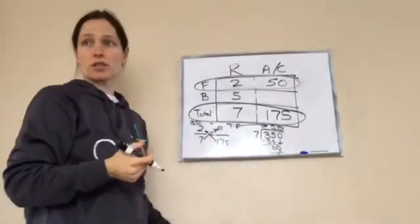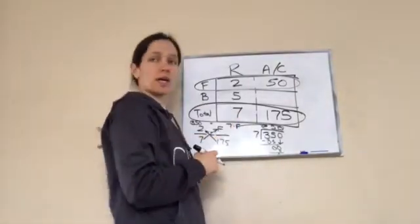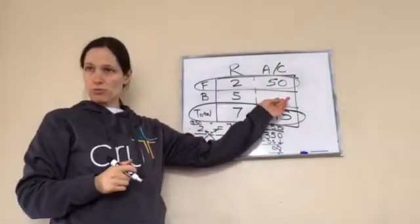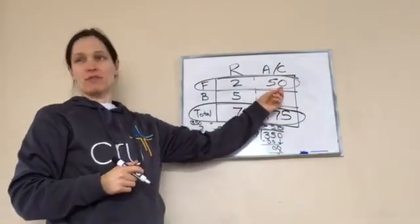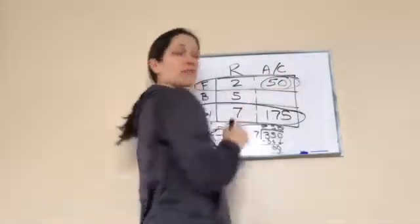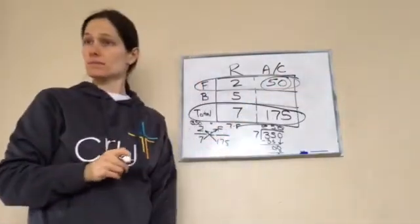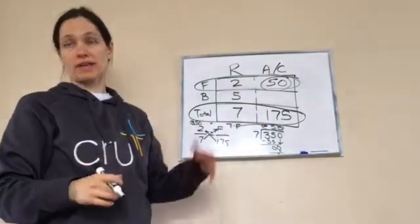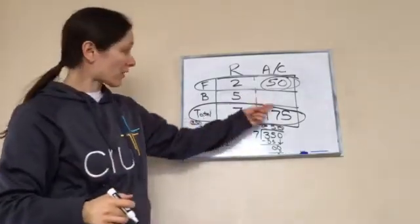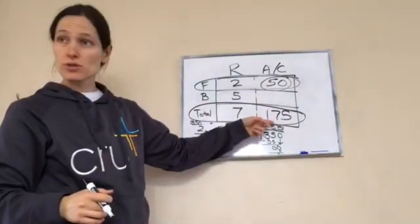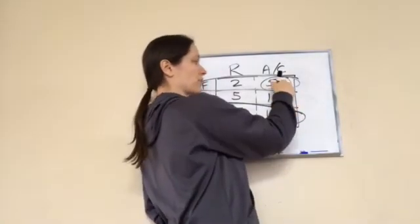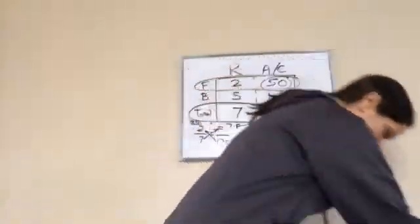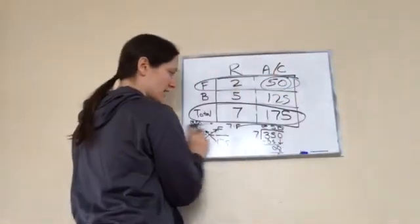Do I have to answer anything else? If they ask how many football players there are, you say 50 and that's it. I know that band members is 125 because 125 plus 50 is 175. Feel like you got it? Yeah. Alright, that is lesson 101.